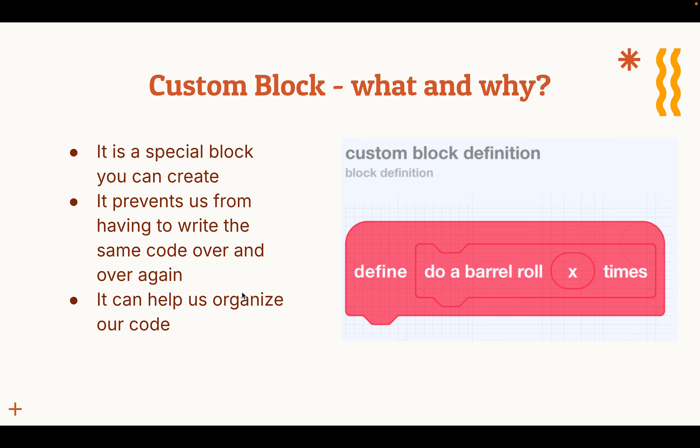An example of this in real life is when you're packing your bag to go to school in the morning. When you're packing your bag, you don't think about every single thing — your math notebook, your reading notebook, your pencil, your highlighters, your water bottle, your lunch. No, you kind of just pack your bag. You say okay, I'm going to pack my bag, and you put everything in and take it with you. You've done it so many times that you don't think about every specific step. It's the same way with the custom block — you're able to repeat actions over and over again, and instead of writing the code every time, you can just use the custom block.